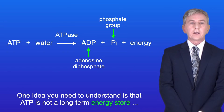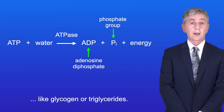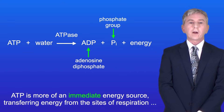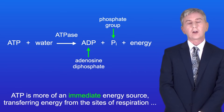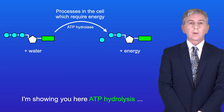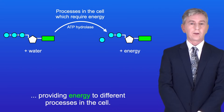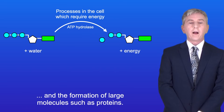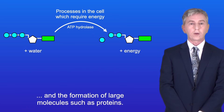Now one idea you need to understand is that ATP is not a long-term energy store like glycogen or triglycerides. ATP is more of an immediate energy source, transferring energy from the sites of respiration to the parts of the cell which require energy. These processes include active transport, muscle contraction, and the formation of large molecules such as proteins.